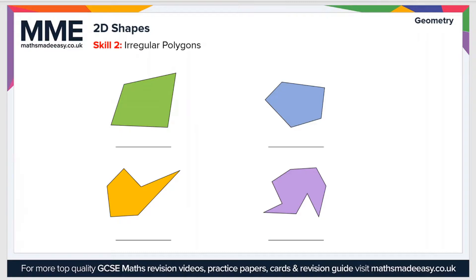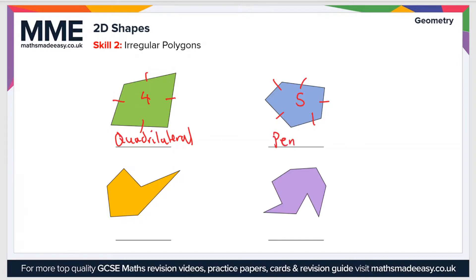Let's go through and name these. We can see there are one, two, three, four sides in this shape, which makes it a quadrilateral — so this is an irregular quadrilateral. In this next case we have one, two, three, four, five sides, so this is an irregular pentagon.